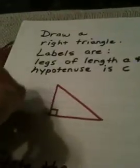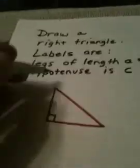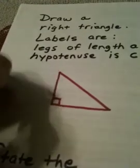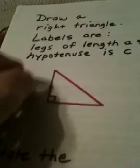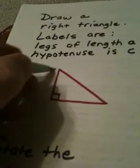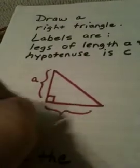A right triangle has two legs and one hypotenuse. The legs are the two sides that form the right angle. So I'm told to label one leg length A, so I will call this length A, and I will call the length of this leg B,